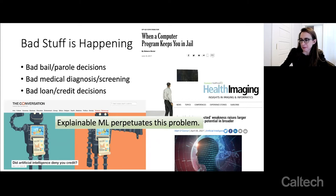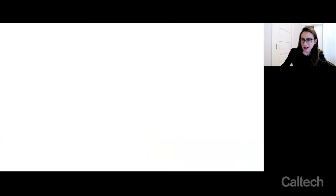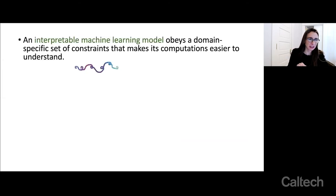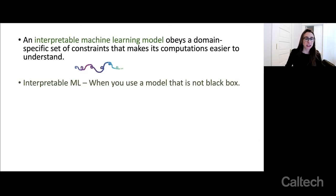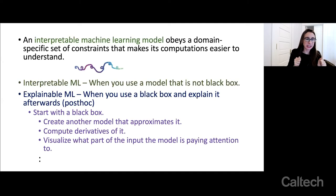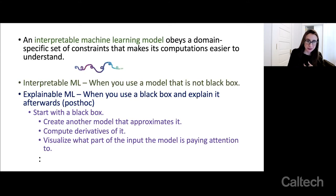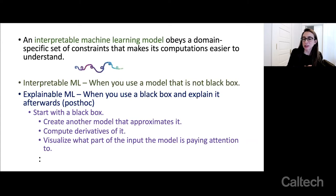I claim that explainable machine learning perpetuates this problem. I want to make a distinction between explanations of black boxes and interpretable machine learning. Interpretable machine learning is where a model obeys a domain-specific set of constraints that makes its computations easier to understand — it is not a black box. Explainable machine learning, by contrast, is where you use a black box and explain it afterwards as a post-hoc analysis: you create another model that approximates the black box, compute its derivatives, or visualize what part of the input it's paying attention to — essentially making an excuse for the model's existence.